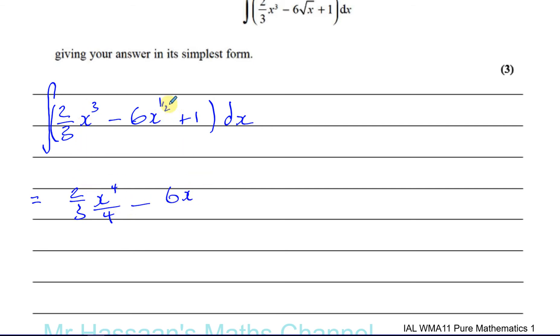Minus 6x to the power of, add 1 to a half, gives you 3 over 2, divided by the new power, 3 over 2. And when you have a constant, like 1, it's going to be 1x.